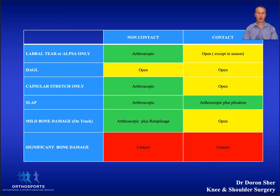If there's glenoid bone loss between 13 and 25% but it's still on track, then an open capsular shift is probably best. And once you have more than about 20% of bone loss or an off-track lesion, it's best to go straight to a Latarjet or other bone block procedure.